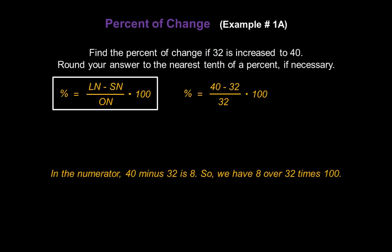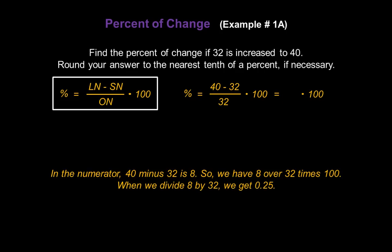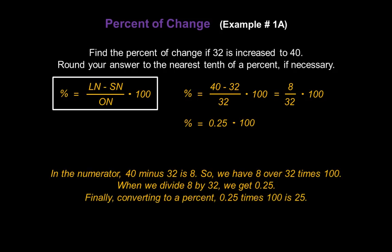Now let's solve. In the numerator, 40 minus 32 is 8, so we rewrite the equation as 8 divided by 32 times 100. When we divide 8 by 32 we get 0.25, so the equation becomes percent equals 0.25 times 100. Finally, converting to a percent: 0.25 times 100 gives us 25. So when 32 is increased to 40, that's a 25% increase.